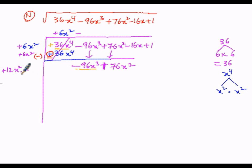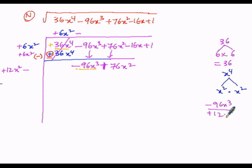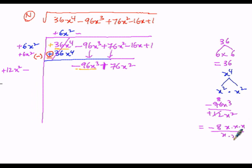Let us divide to get the quotient. Here minus 96x cubed must be divided by the first term of the divisor, which is 12x squared. So minus 96x cubed divided by 12x squared: 12 times 8 is 96, and x cubed divided by x squared cancels to give x. Therefore the new quotient term is minus 8x.